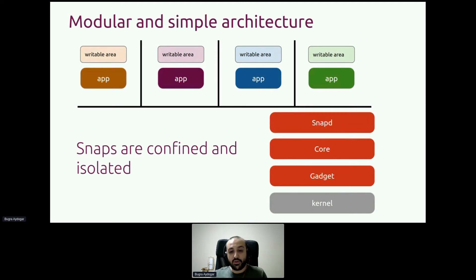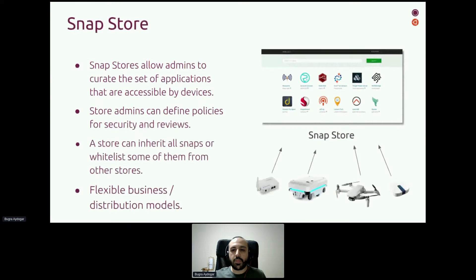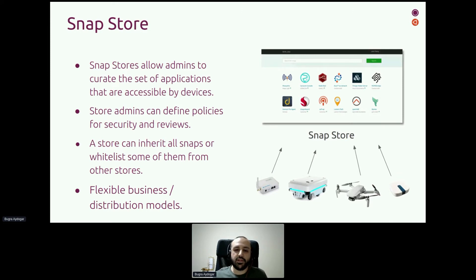Snaps are running in their own bubble — they are confined. You have to define some interfaces to be able to communicate with hardware resources and also software middlewares, like DBus for instance. We also have a snap store, which is a kind of marketplace for your snaps, and it provides the over-the-air update mechanism for devices. Basically, your device registers to the snap store, downloads some snaps, and installs them. If you are the publisher of a certain snap and you create a new version and upload it to the store, devices that already have it installed will pull and update to it.